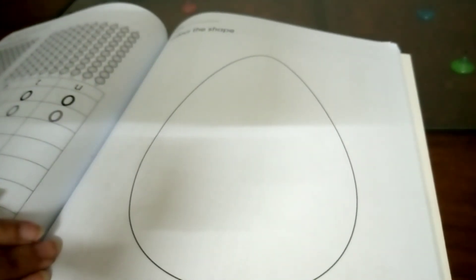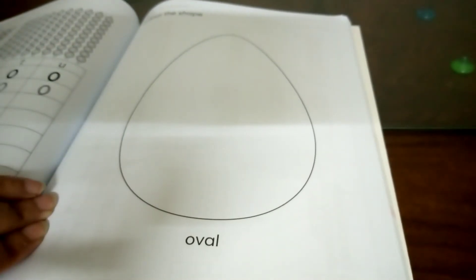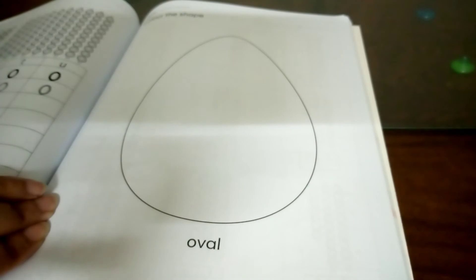You have already done circle, square, triangle, rectangle, and this is oval. Oval shape.